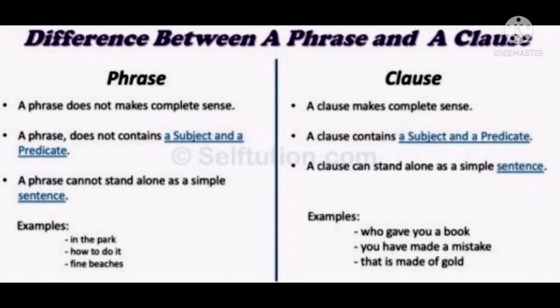Now, what is a clause? A clause makes complete sense, whereas a phrase does not make complete sense. Secondly, a clause contains a subject and a predicate. A clause can stand alone as a simple sentence. Since it has a subject and a predicate, it can stand alone because it is a complete sentence. Look at the examples: 'Who gave you a book?' 'You have made a mistake.' 'That is made of gold.' All these sentences have a complete meaning and are independent. A phrase does not have a complete meaning, so it is dependent and cannot stand alone.